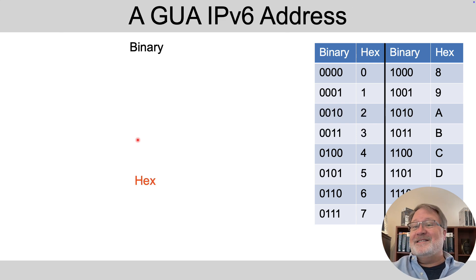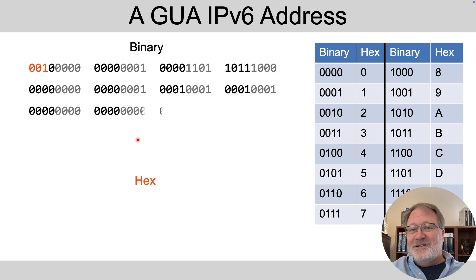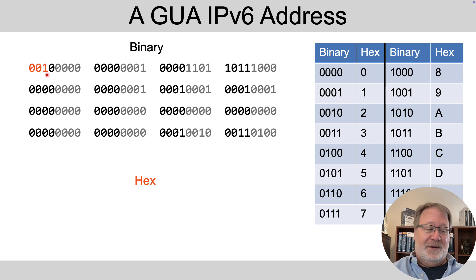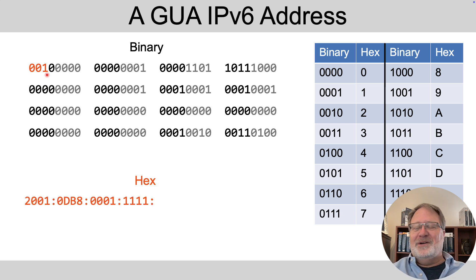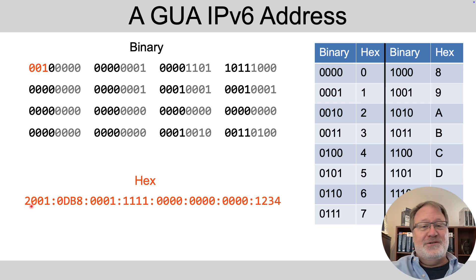Here's an example of a GUA address in binary. It's 128 bits long. The most important part: it begins with 001, but mostly remember it begins with hex 2 or 3. Here's the hex version of that address — there's the 2 at the beginning, so you should instantly think that's a GUA.